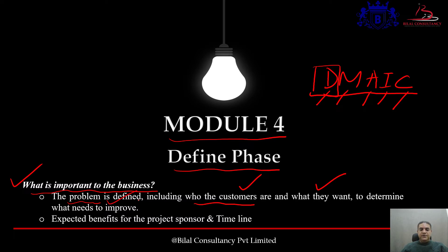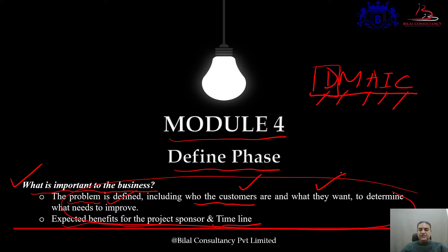Furthermore, we try to answer what the expected benefit of this particular project would be, in terms of financials and in terms of customer satisfaction. For example, if the customer satisfaction level is currently 70% and we want to improve it to 80% or 90%. We also try to answer how long it would take to complete this particular project. We capture all these things in the Define phase: identifying the customer, their requirements, the financial benefit, the satisfaction level increase, and the project timeline.